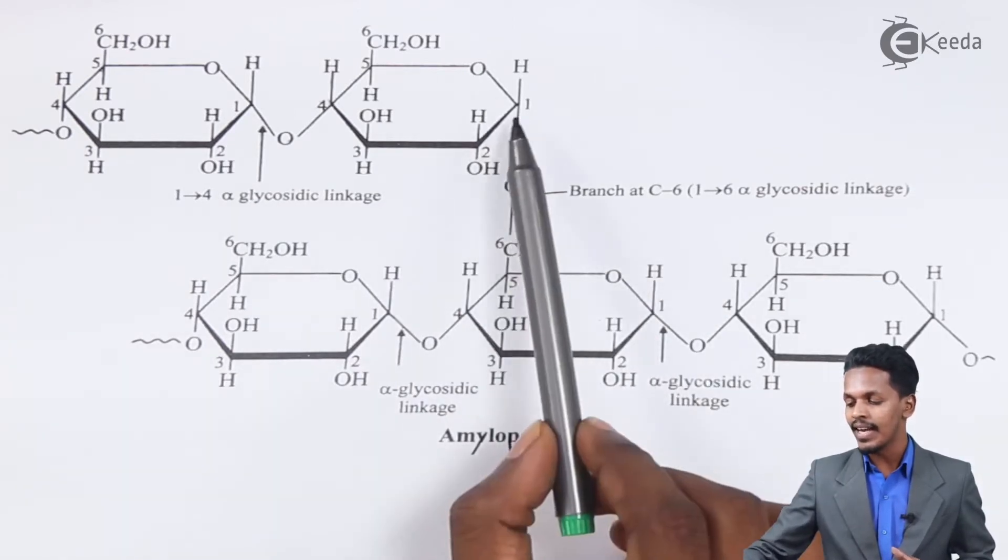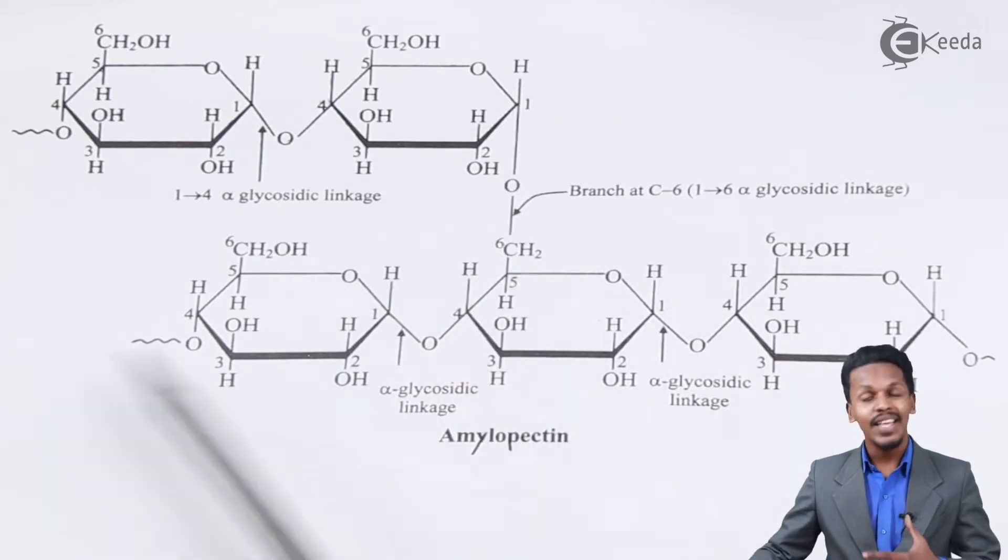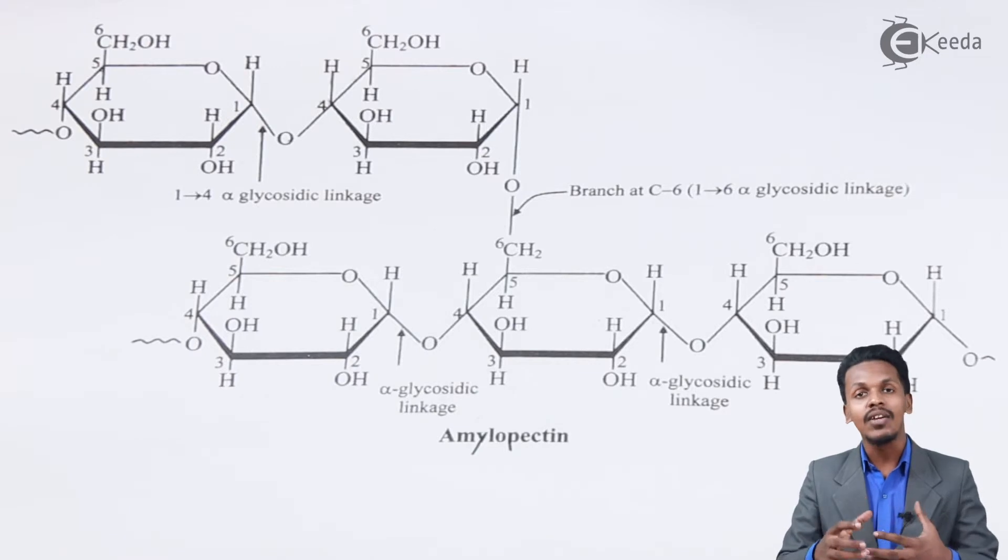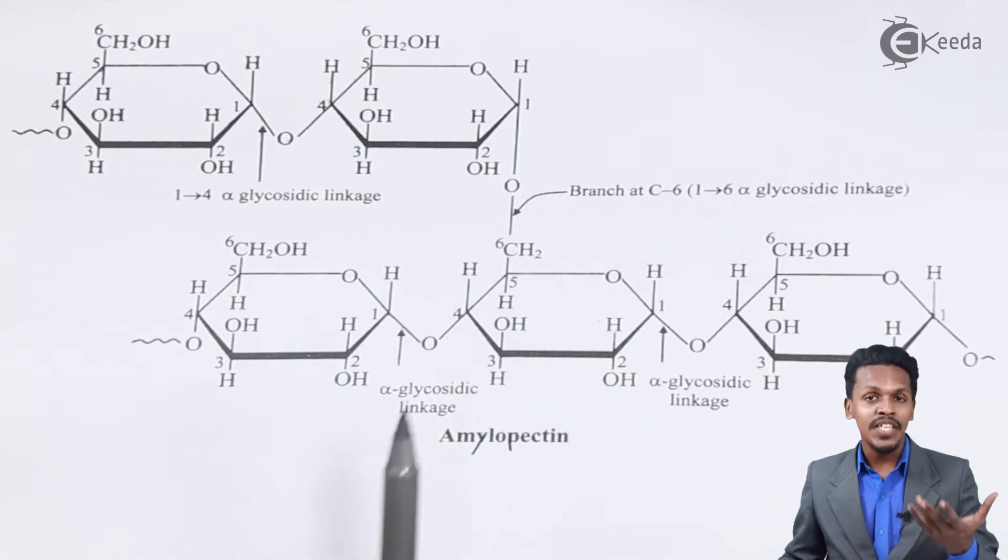There will be multiple units and multiple sections where it forms branches. That's the reason starch is insoluble in water. Because of this property, these are known as high molecular mass polysaccharides.